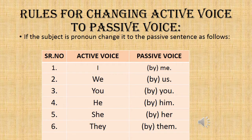Rules for changing active voice to passive voice: if the subject is a pronoun, change it in the passive sentence as follows — I becomes me, we becomes us, you remains you, he becomes him, she becomes her, and they becomes them. Remember to use the word 'by' while changing from active to passive voice.